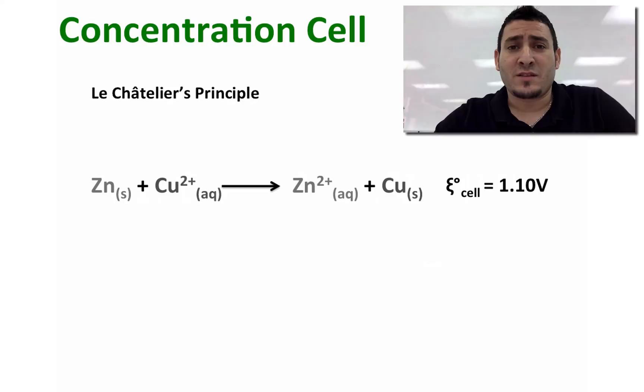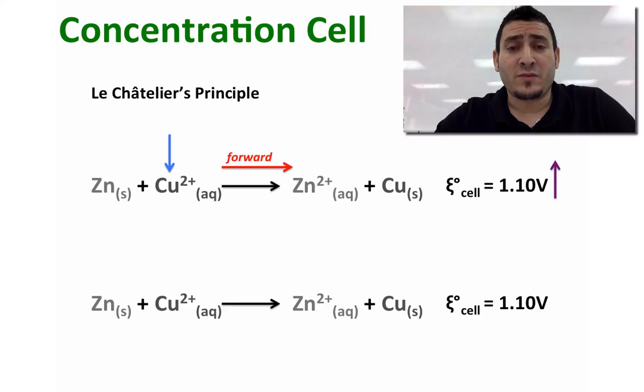According to Le Chatelier's principle, if we increase the concentration of Cu2+, the reaction will favor the forward direction and therefore the cell potential will increase. However, if we increase the concentration of Zn2+, which is a product, the reaction will favor the reverse direction and therefore the cell potential will decrease.